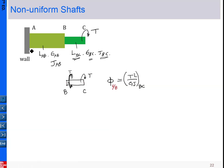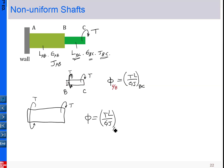Next, we take the free body diagram of the AB portion. The torsion transmitted through BC acts on B by action-reaction, and the equilibrium torsion acts at A. Applying φ = TL/GJ using the information for shaft AB — G_AB, J_AB, and L_AB — we obtain φ_B relative to A, which is the angle of twist between the two ends B and A.